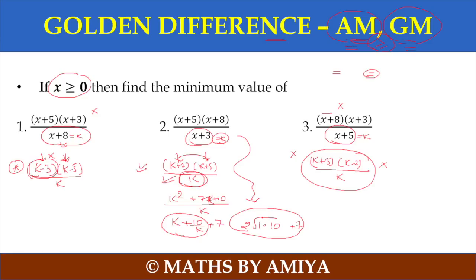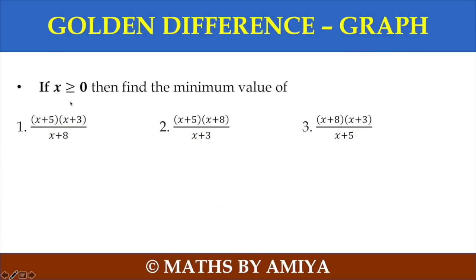So this one is the answer to this question because I am positive with respect to k. We cannot apply AM-GM here. Now why can't we do it? This will be better to understand when we use nothing but the graph method. Let's check the graph method.